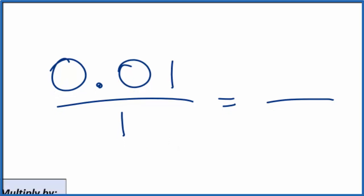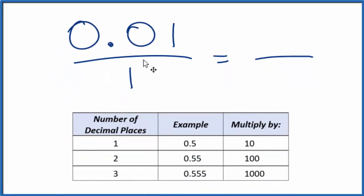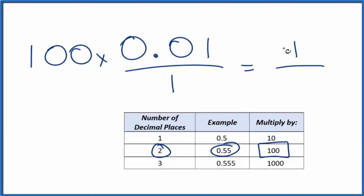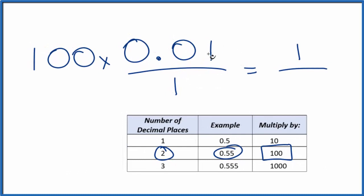Next, if we look at this table here, since we have 0.01, we have two decimal places — like 0.55 — we're going to multiply by 100. But we can't multiply just the top by 100, because that would change the value. 1 is not equal to 0.01. So we multiply the top and the bottom by 100.